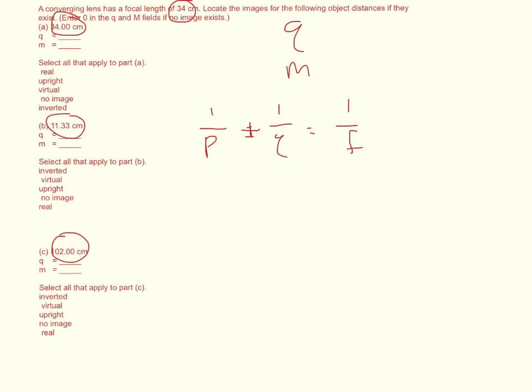So we want to solve for Q. 1 over Q is equal to 1 over the focal point minus 1 over P. I'm going to go ahead and jump to a couple of steps. If you don't know how I got this algebraically, then please go back and review the first 12 videos for this chapter.